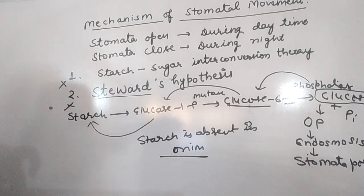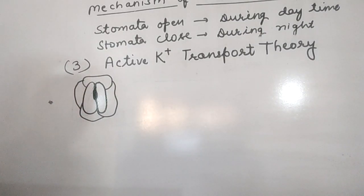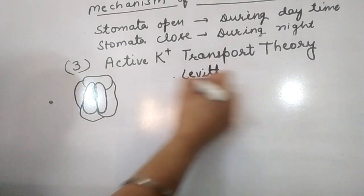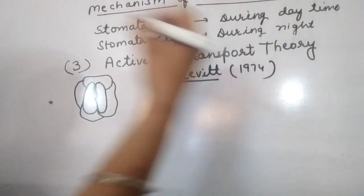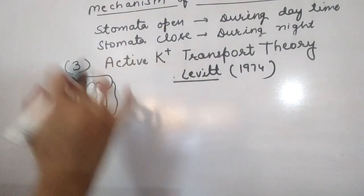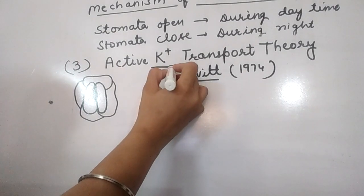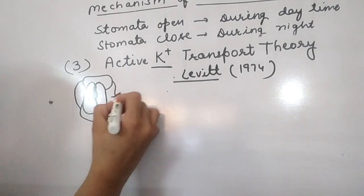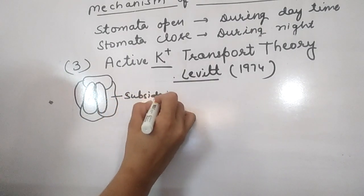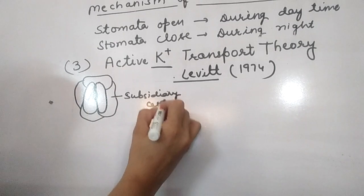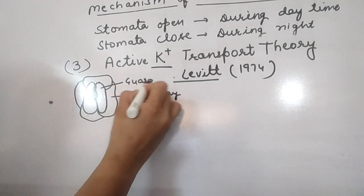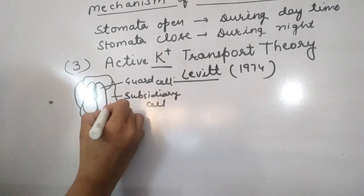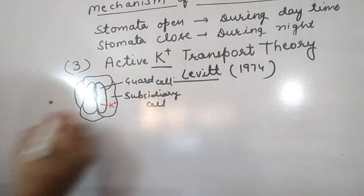The next theory is the Active Potassium Ion Transport Theory. This theory was proposed by Levitt in 1974. This is the most acceptable theory and very important for your exams. According to Levitt, potassium ions play the main role. There are guard cells and subsidiary cells present.